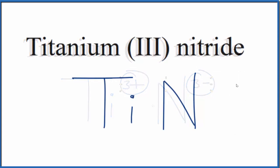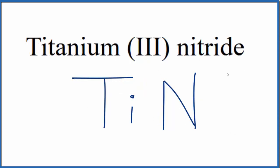So this is the formula for titanium III nitride. If you were given this formula and asked to write the name, you know that nitrogen forms the nitride ion which is 3-, the titanium has to be 3+. That's why we have the Roman numeral III here after titanium.